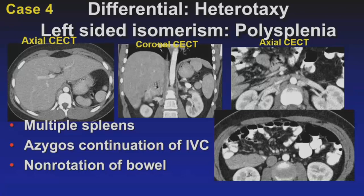Heterotaxia syndromes come in two flavors. Right-sided isomerism presents very early due to association with cyanotic heart disease. Left-sided isomerism can present in late childhood or adulthood, and is associated with polysplenia. This patient had multiple spleens — about four in the left upper quadrant — and other imaging features including discontinuous IVC with azygous continuation and non-rotation of bowel, with small bowel entirely on the right and colon on the left.